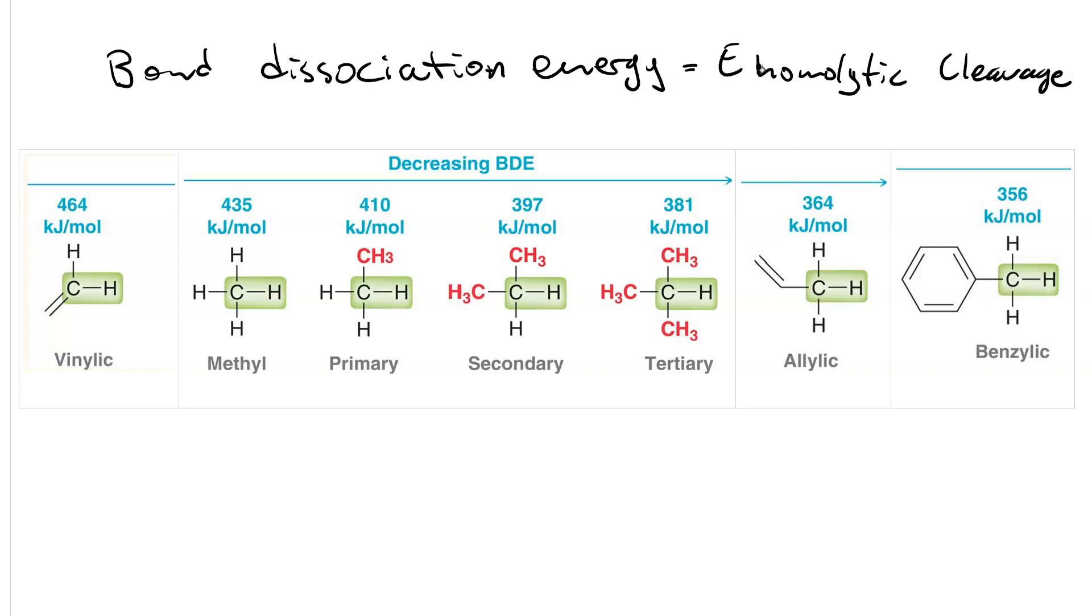You can see in this list breaking a vinylic hydrogen carbon bond costs the most energy at 464 kJ per mole. And then we have a smooth decrease as you go from vinylic to methyl to primary to secondary to tertiary. You have 381 kJ per mole.